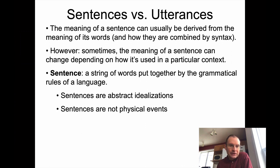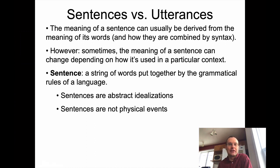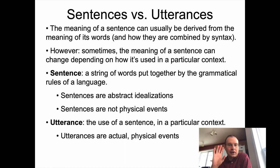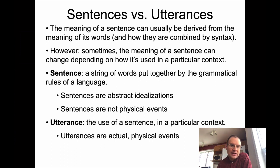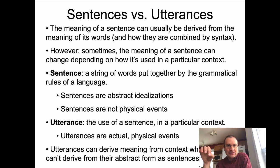To give you some formal definitions: a sentence is just a string of words put together by the grammatical rules of a language, as we've seen in syntax. In this respect, sentences are abstract — they're idealizations. They're something you can put on a PowerPoint slide or a piece of paper or in a syntactic tree; they're not actually physical events. Utterances, on the other hand, are the use of a sentence in a particular context. Utterances are actual physical events that happen in the world around us, and therefore can derive meaning from the context in which they are uttered that you could not simply get from looking at a sentence as an abstract form.